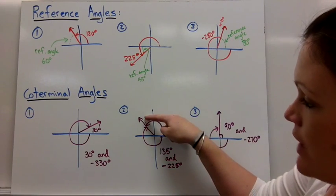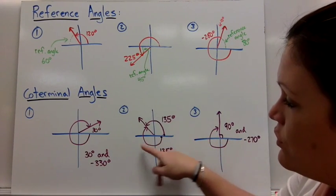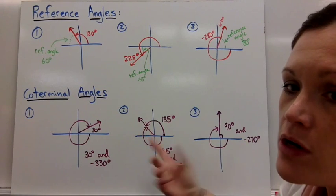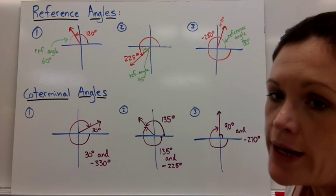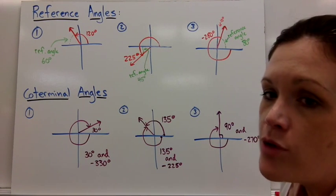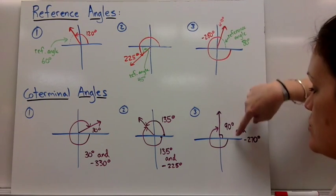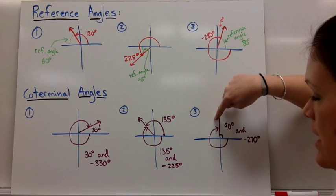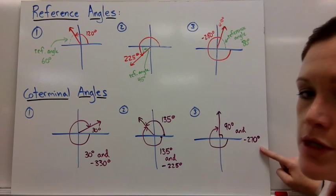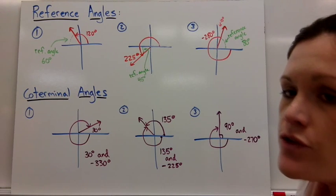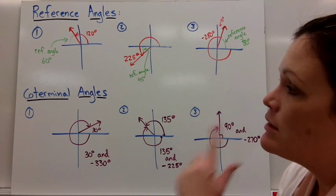A 135 degree angle and a negative 225 degree angle also share the same terminal side, so they're considered coterminal angles. And then I put one that's at 90 degrees. 90 degrees would share the same terminal side as negative 270 degrees. So those are just a few more examples to help understand this vocabulary.